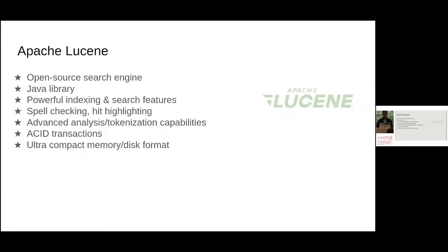Let's assume the architect decided that Apache Lucene is the best system to host books and authors. This is realistic because we may want to perform text search over pages and retrieve books. Apache Lucene is an open source search engine and Java library that provides powerful indexing and search features, including spell checking, hit highlighting, tokenization, and other features. Interestingly, it also supports ACID transactions, so you can really build a DBMS on top of Apache Lucene quite easily.